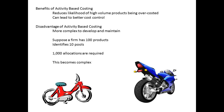The main benefit of activity-based costing is that it can identify whether a product is being over-costed or under-costed. This, in turn, should lead to better cost control. A disadvantage is that it becomes very unwieldy where a business has many products. A business producing 100 products with 10 cost pools has 1,000 allocations to make.